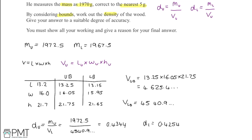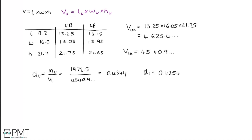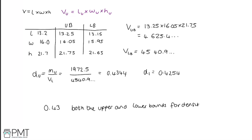The upper and lower bounds for density are very similar — they are the same when rounded to two decimal places or two significant figures. So we give the answer as 0.43. The justification is that both the upper bound (0.4344) and lower bound (0.4254) round to 0.43 to two decimal places, so it would not be appropriate to round to any more decimal places.